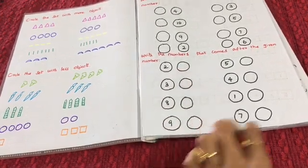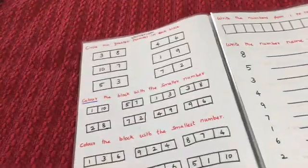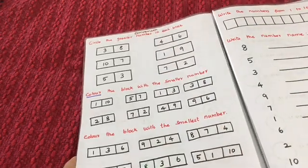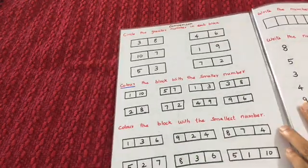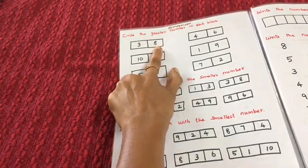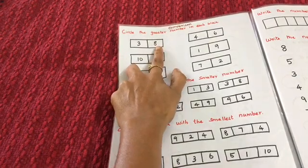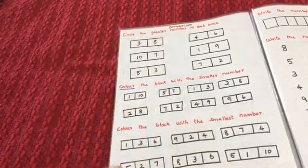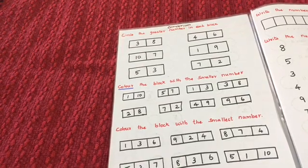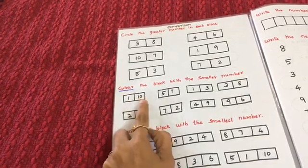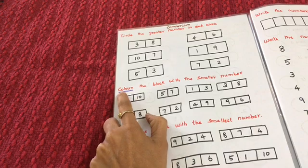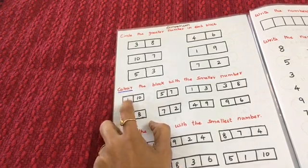Next he has to compare and circle the greater number in each block. For example, number 3 vs. number 8 — number 8 is greater, so he circles 8. Then for 'color the block with the smaller number': for 1 and 10, 1 is smaller so he colors that block blue.